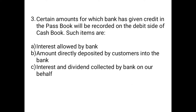Certain amounts for which the bank has given credit in the pass book — meaning added to your bank account — will be recorded on the debit side of the cash book. Such items include interest allowed by the bank, amounts directly deposited by customers into the bank, and interest and dividend collected by the bank on our behalf.